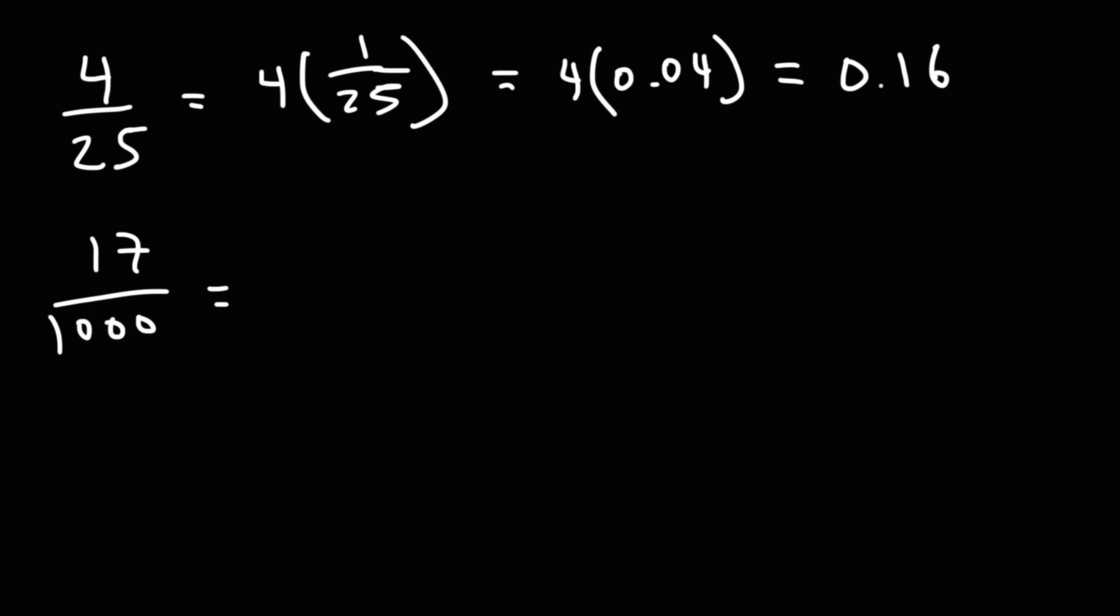Now 17 over 1,000. That's 17 times 1 over 1,000. We know that 1 over 1,000 is 0.001. If we multiply 17 by that number, we'll get 0.017.